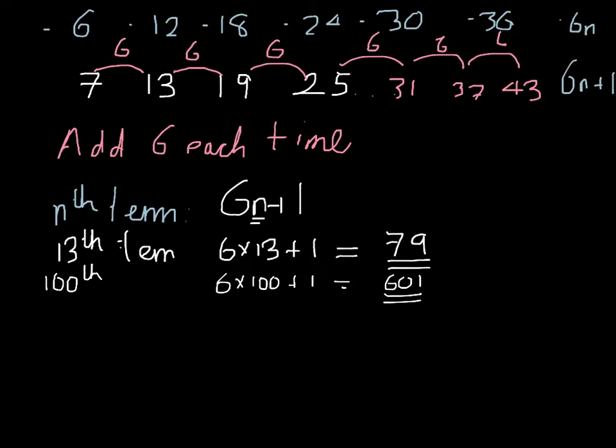The last thing that the nth term could do is you could check whether a number was actually in the sequence. So suppose we were asked, is 91 in the sequence and is 95 in the sequence? Check. Well, we could keep adding 6s and see if those two numbers come up.